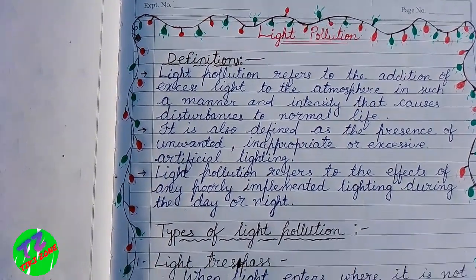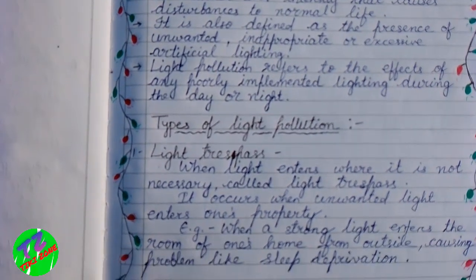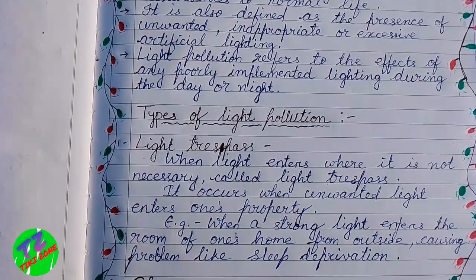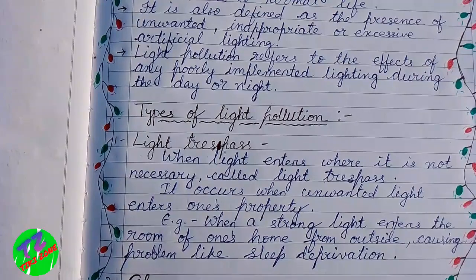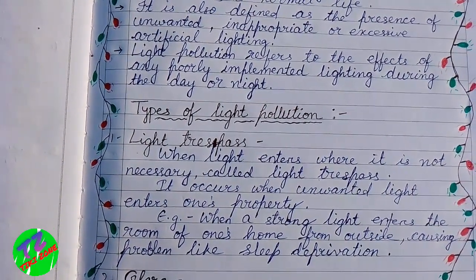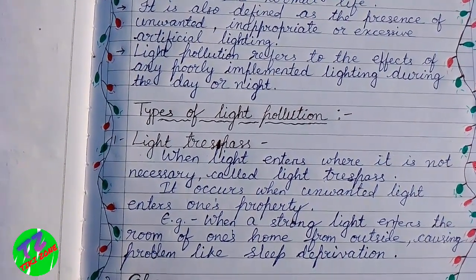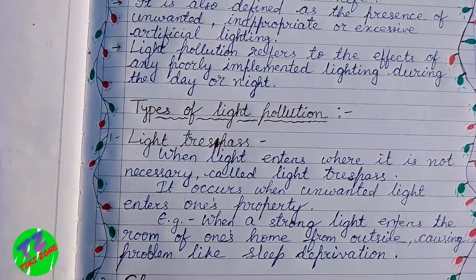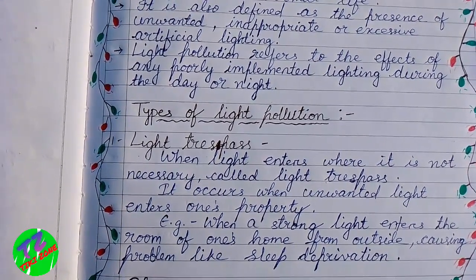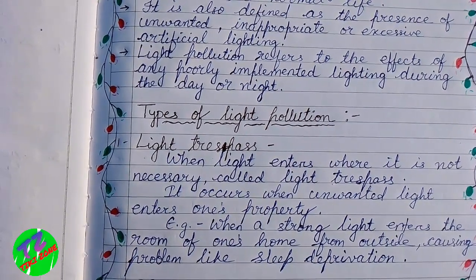Then let us discuss what are the types of light pollution. There are various types of light pollution. The first one is light trespass. When light enters where it is not necessary, that is called light trespass.